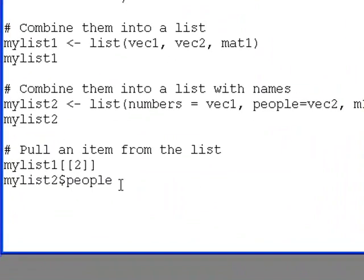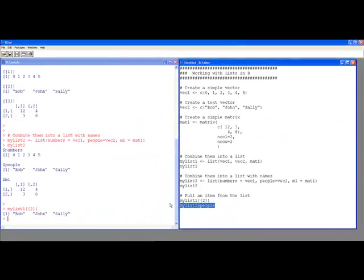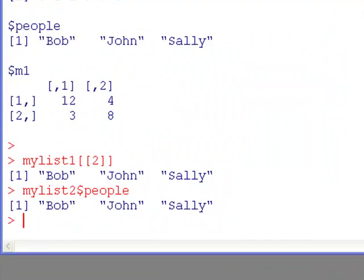If I look at it from the dollar sign perspective to pull off something with the name associated with it, in this case people, I run this code and I get exactly the same answer. And the reason is I've just named it. So what I recommend people do is whenever they create a list, if it's important to be able to pull the items off easily, I would recommend that you use the dollar sign notation and name each one of the pieces that go into your list.